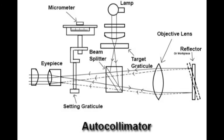Coming to the working of the auto collimator: the reflecting surface is the surface whose inclination is to be measured by using this device. The distance between the source of light and the reflected ray in the focal plane is measured using a micrometer microscope. First, the light source is illuminated and the rays of light diverge from the intersection point of the cross line target graticule, which is placed at the focal plane of the objective lens. The rays then reach the beam splitter, which directs them towards the objective lens. The objective lens parallelizes the light rays and they move towards the reflector.